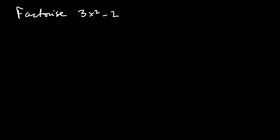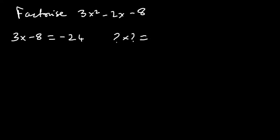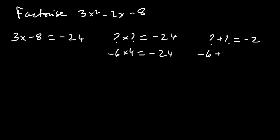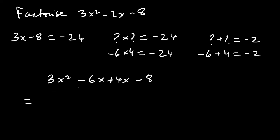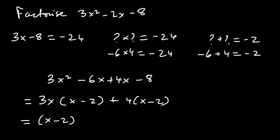Let's do one more example. Factorize 3x squared minus 2x minus 8. We start by multiplying the first and last numbers as usual: 3 times minus 8 is minus 24. We're looking for two numbers that multiply to give minus 24 and add to give minus 2. I can see minus 6 times 4 is minus 24, and minus 6 plus 4 is minus 2. The quadratic becomes 3x squared minus 6x plus 4x minus 8, which factorizes to 3x times x minus 2, plus 4 times x minus 2, giving x minus 2 times 3x plus 4.